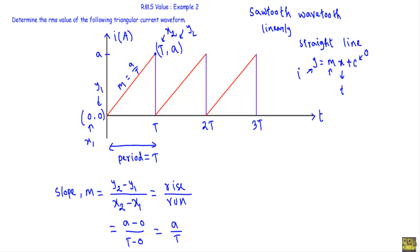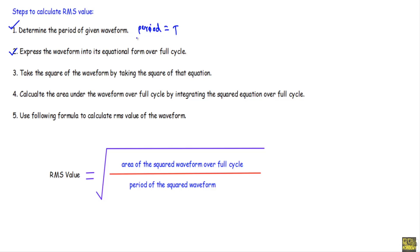Therefore the slope of this straight line m is equal to A over capital T. This straight line will have the equation i = (A / T) · t. So we can express this triangular waveform with the time-varying equation i = (A / T) · t. After that we will take the square of the waveform.